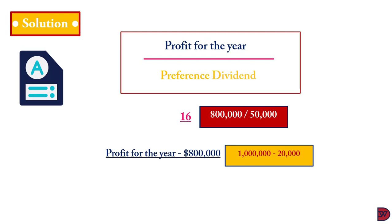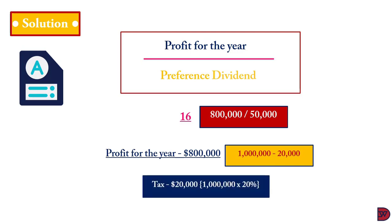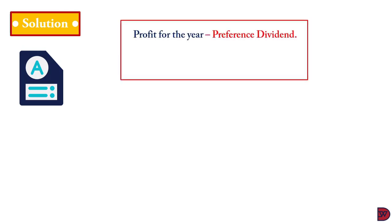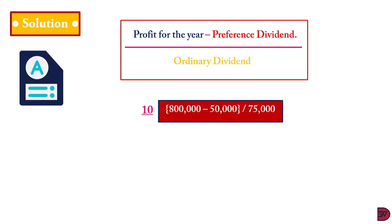The profit for the year of $800,000 was arrived at by subtracting tax from profit before tax. The tax of $200,000 was calculated by multiplying the 20% tax rate on the $1,000,000 profit before tax. For the ordinary dividend, the formula is profit for the year less the preference dividend, divided by the ordinary dividend. That gives a dividend cover of 10, calculated as $800,000 minus $50,000 preference dividend, divided by the $75,000 ordinary dividend.